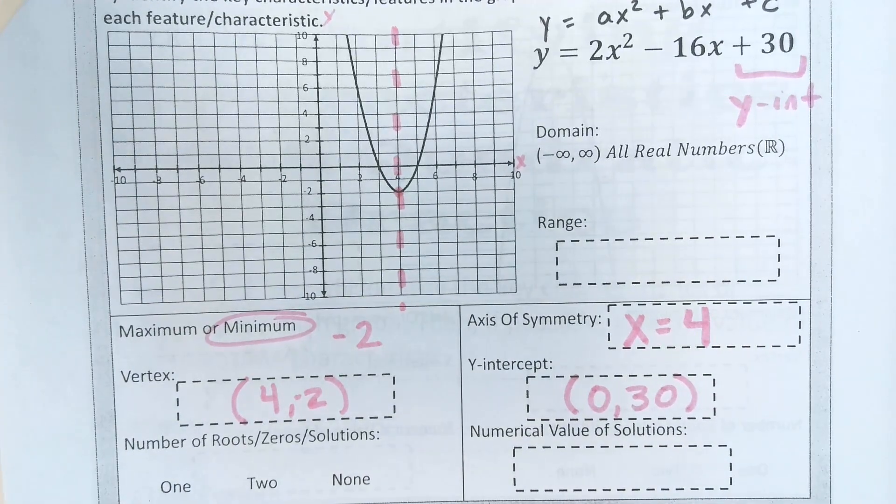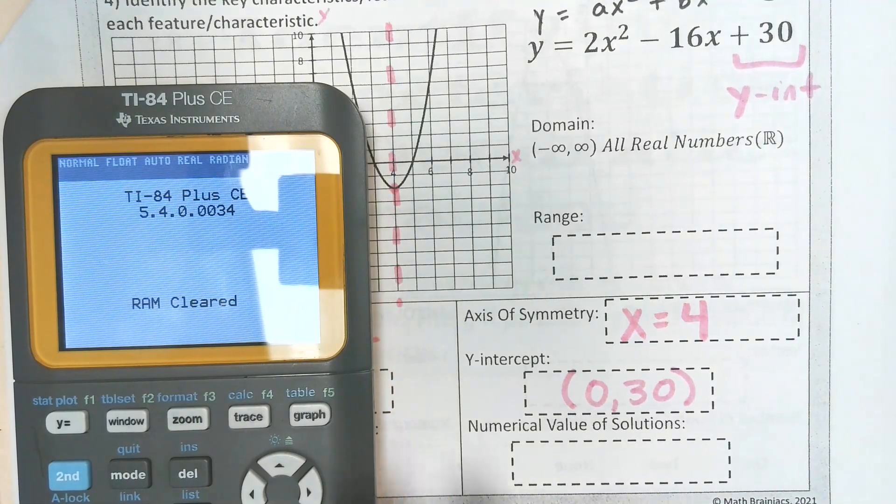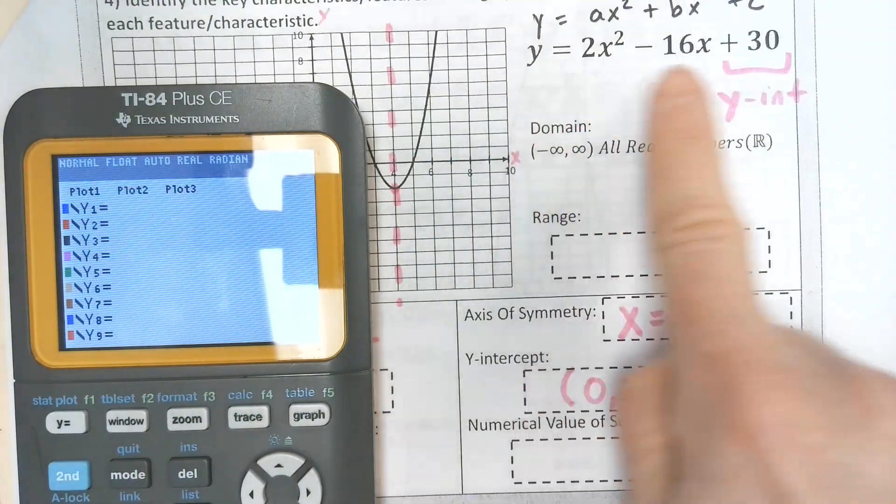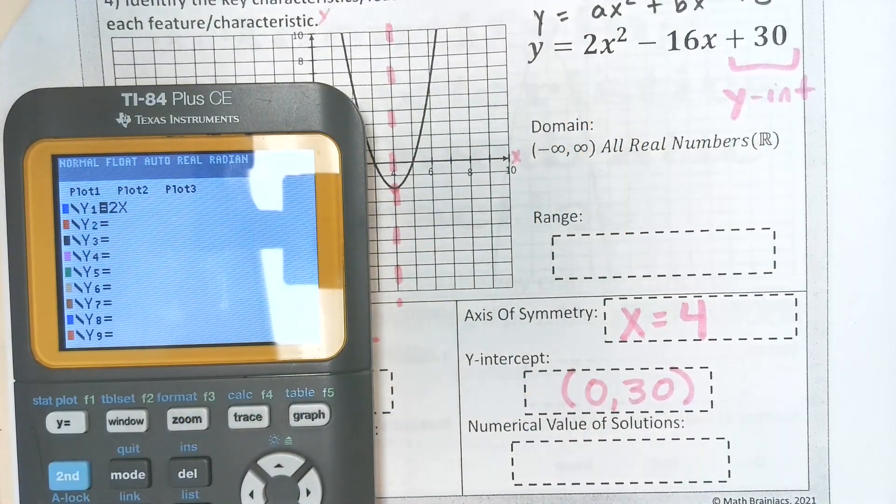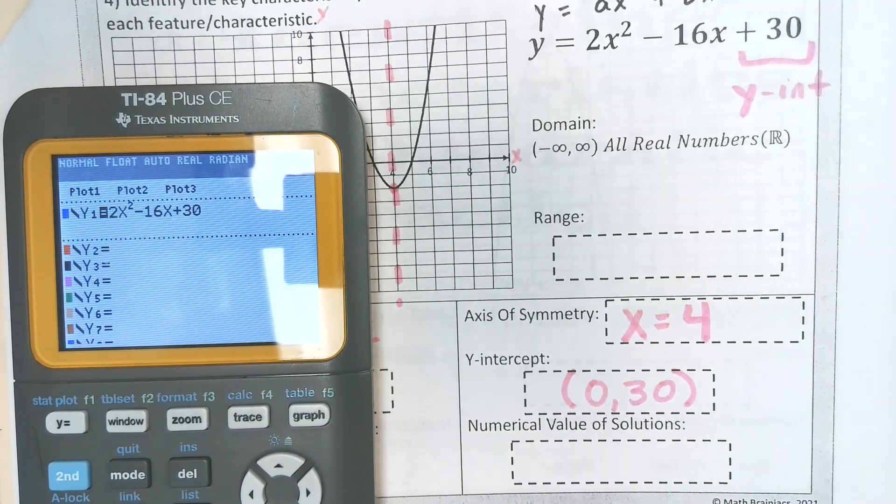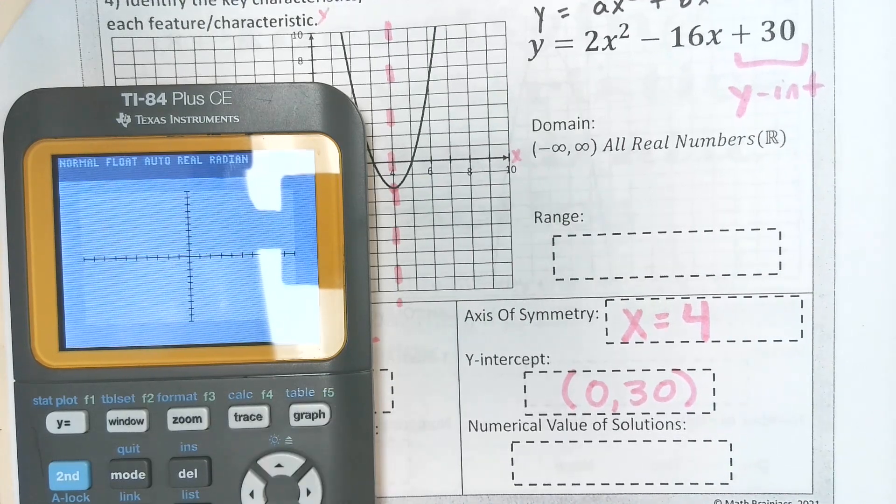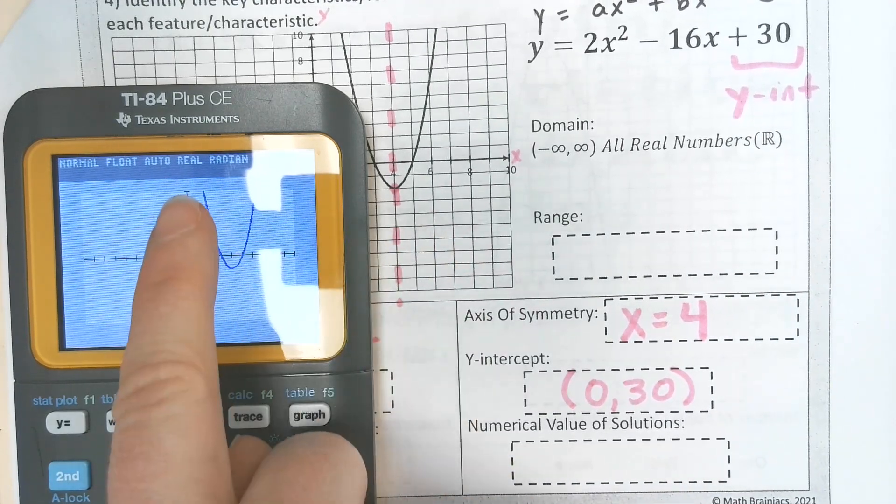What I want you to do is I want to show you that on your calculator. Go to your calculator, go to y equals. We're going to put this in: 2x squared minus 16x plus 30. So it looks the same, right? It's somewhere up there.